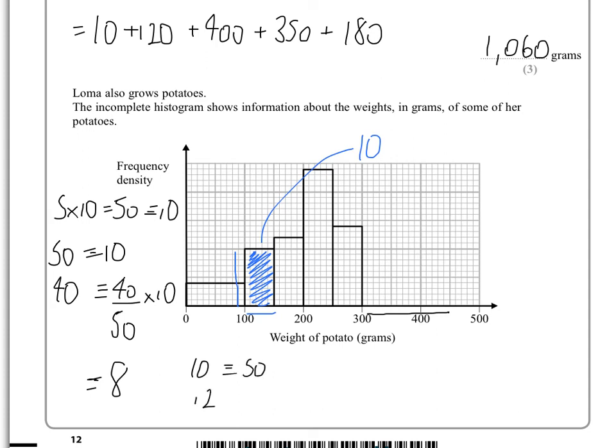We know that 10 is equivalent to 50 squares. So therefore 12 will be equivalent to 12 over 10 times 50. That gives us an answer of 60. So the area has to be 60 squares.